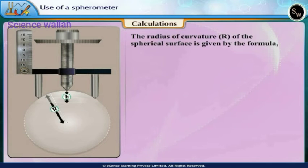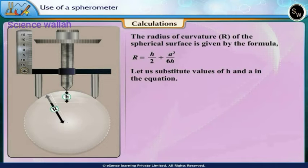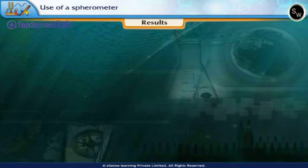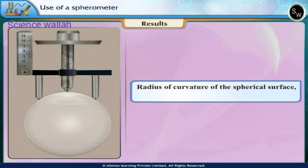The radius of curvature R of the spherical surface is given by the formula R = H/2 + A²/6H. Let us substitute values of H and A in the equation. Therefore, R = 0.130/2 + 4²/(6 × 0.130) = 0.065 + 20.54 = 20.61 cm. Results: Radius of curvature of the spherical surface R = 20.61 cm.